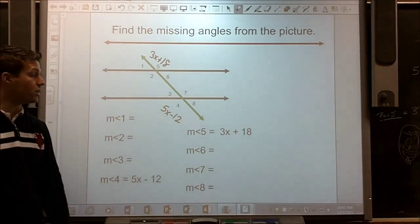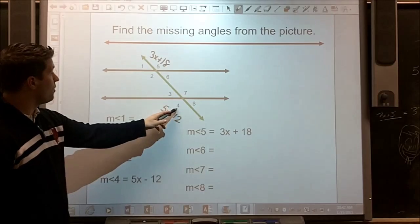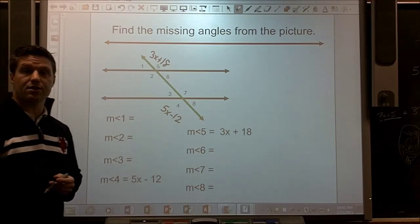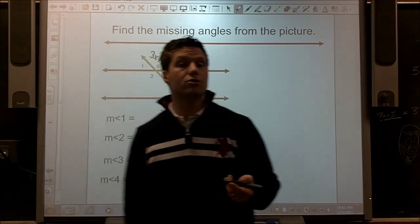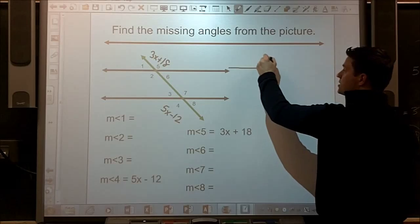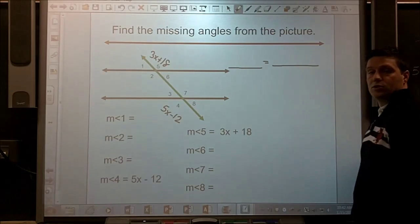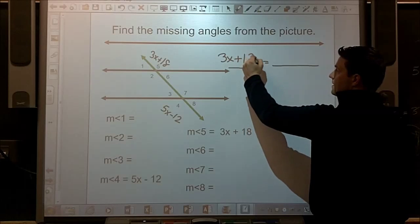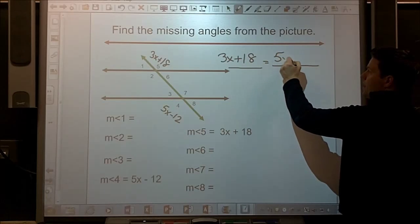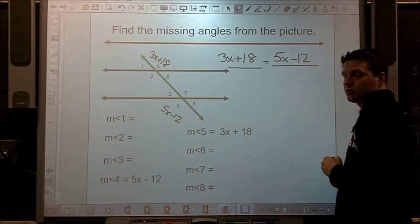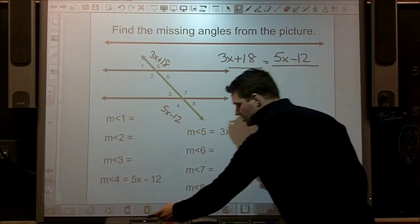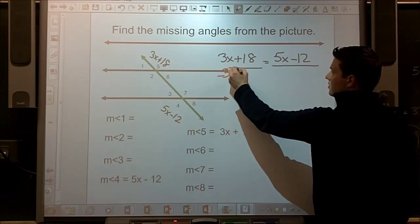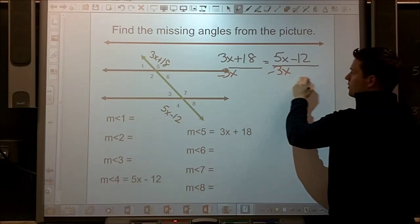So now I'm going to write my equation. Let's look. 4 and 5, those are alternate exterior angles. And alternate exterior angles are equal to each other. So I still have an equal to equation. 3x plus 18 equals 5x minus 12. Again, alternate exterior angles.